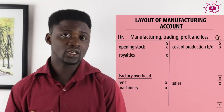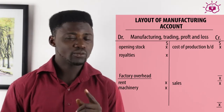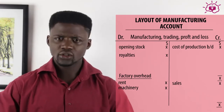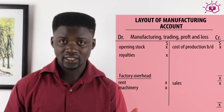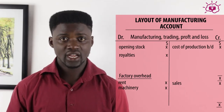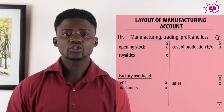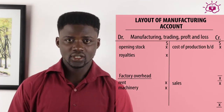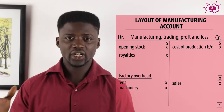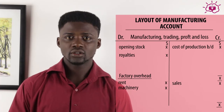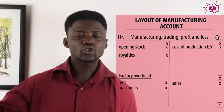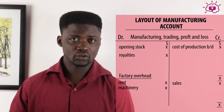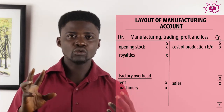Now let's quickly talk about the format or layout of manufacturing trading profit and loss accounts. In manufacturing accounts, a trading profit and loss account is required. The account has a debit side on the left-hand side and a credit side on the right-hand side. Direct expenses and other expenses like royalties are part of all expenses to consider. On the credit side, you have cost of production brought down. Note that in each of these, you will have two currency columns.